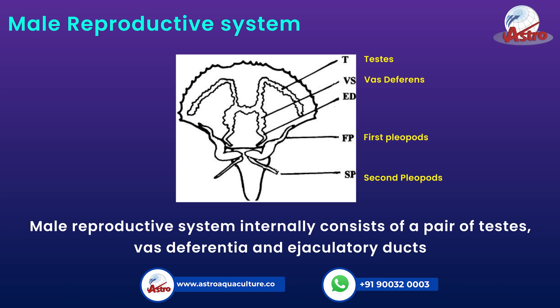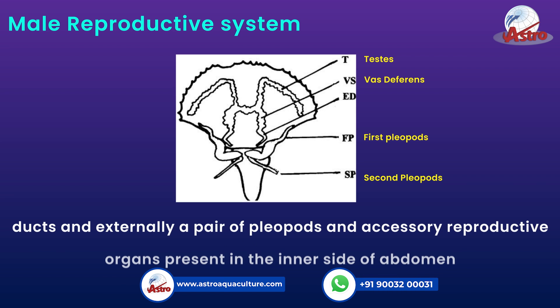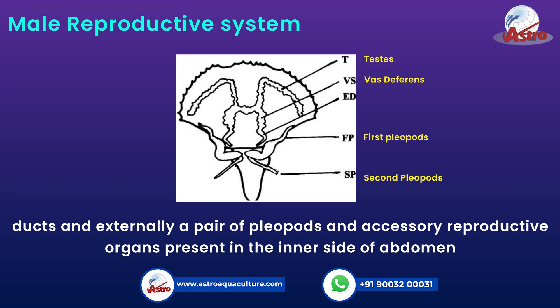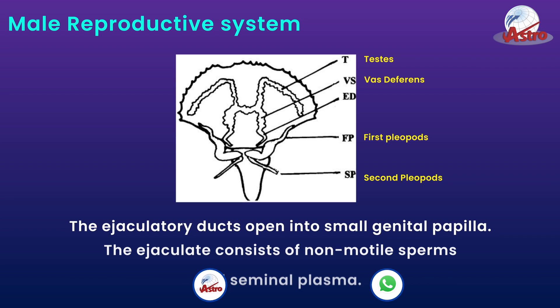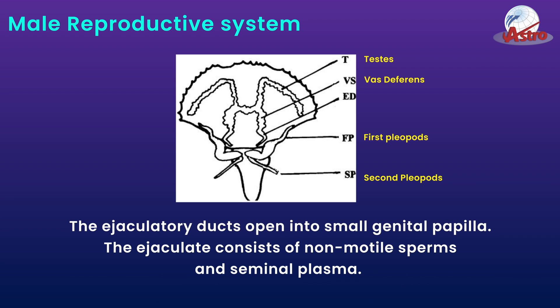Male Reproductive System: The male reproductive system internally consists of a pair of testes, vas deferentia, and ejaculatory ducts, and externally a pair of pleopods and accessory reproductive organs present in the inner side of the abdomen. The ejaculatory ducts open into a small genital papilla. The ejaculate consists of non-motile sperms and seminal plasma.